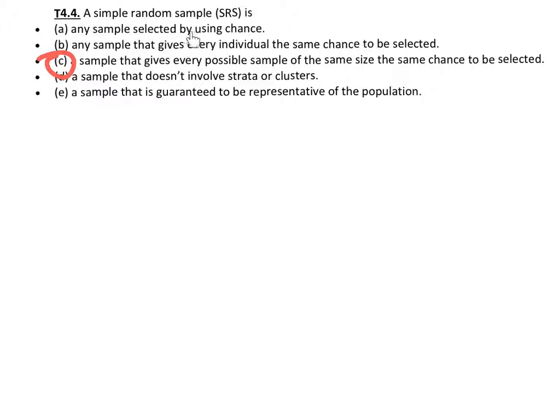Letter A, a sample selected by using chance. That's kind of what we're doing, but we have to be more specific. B, any sample that gives every individual the same chance to be selected. If our sample size was one, I guess this would be true, but it's that the possible sample sizes that we're looking for, every one of those outcomes has to be possible.